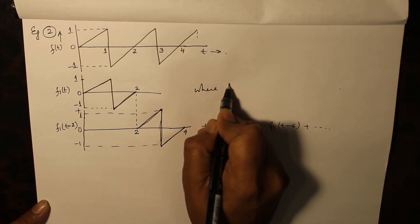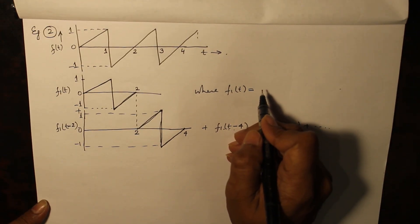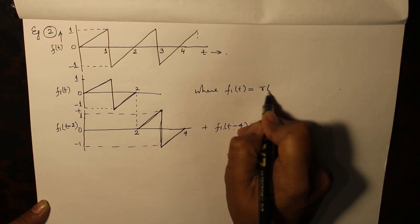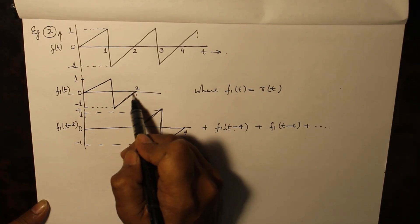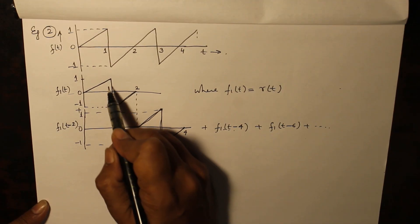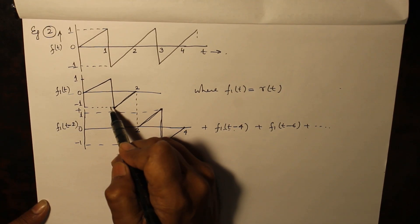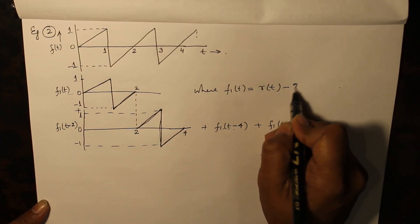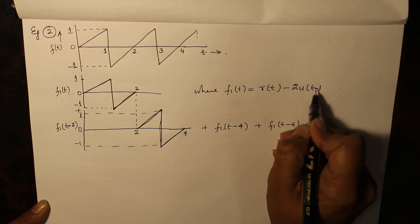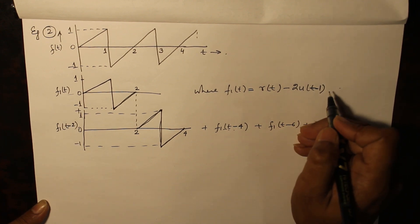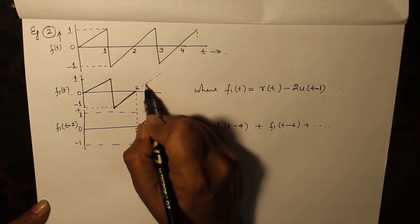Where f1(t) by waveform synthesis can be found. You can do it yourself. r(t) first ramp signal, and the other slope is also same. So there is just one change of step signal from 1 to minus 1. So you have minus 2u(t-1).